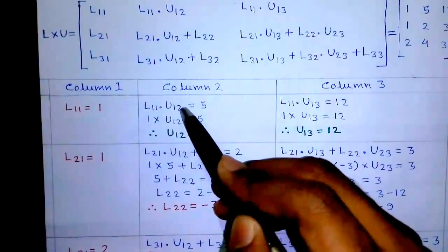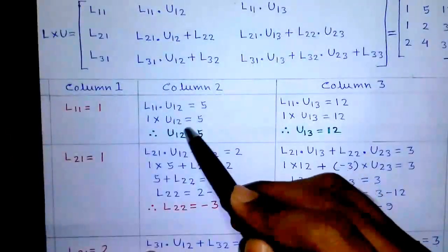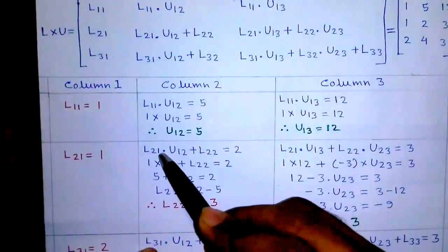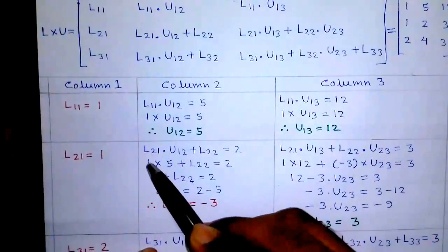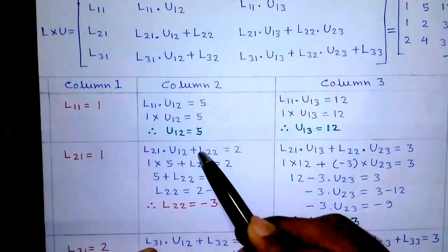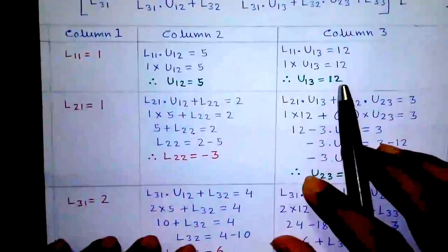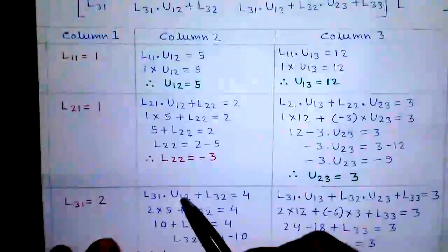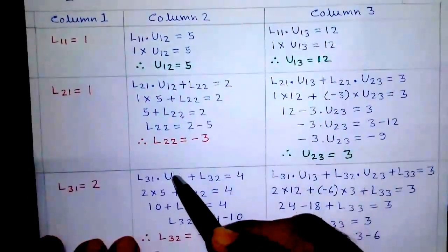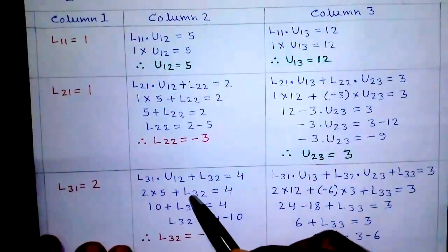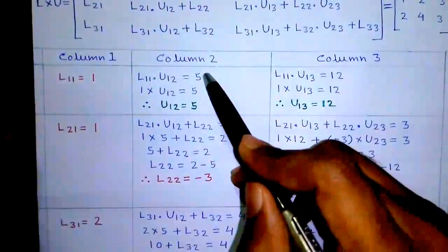Next, column 2. First element: L11 into U12 equals 5. L11 is 1 into U12 equals 5, so U12 equals 5. Next element: L21 into U12 plus L22 equals 2. 1 into 5 plus L22 equals 2, so L22 equals minus 3. Next element: L31 into U12 plus L32 equals 4. 2 into 5 plus L32 equals 4, so L32 equals minus 6. Column 2 is done.